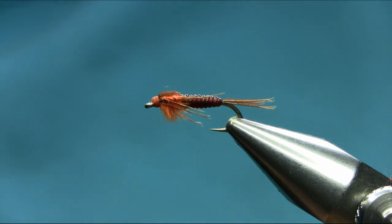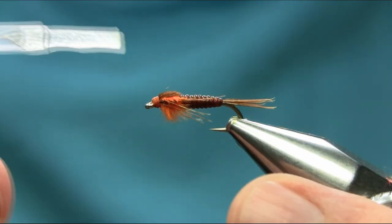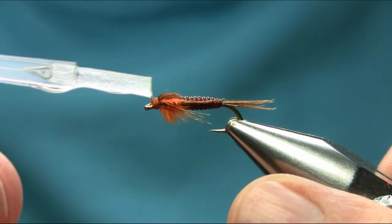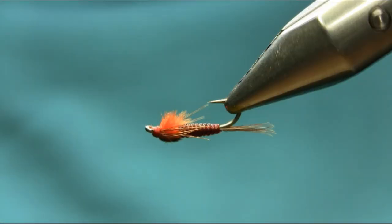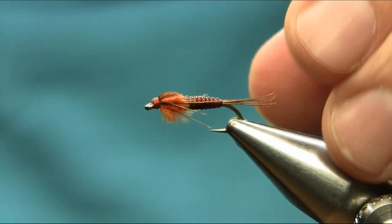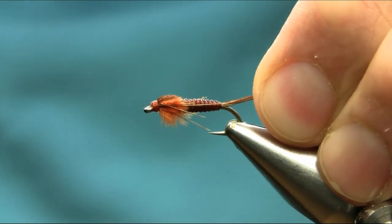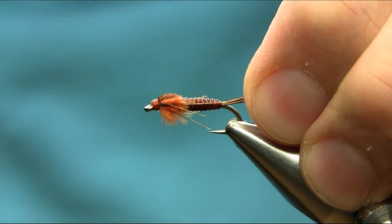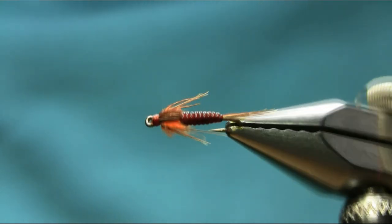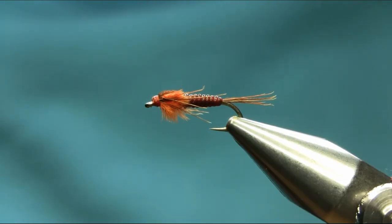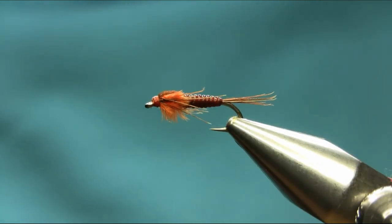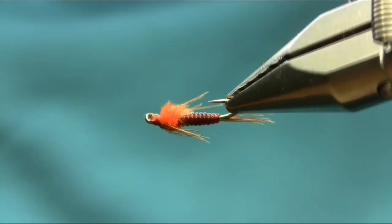Finally you need to put some varnish on the head. So there you have another one of my favorite patterns, it's a stretchy elastic pheasant tail with the orange hot spot. Great pattern for a large still water or if you're fishing in the river, add some weight on. I hope you enjoy this video, thanks for watching.